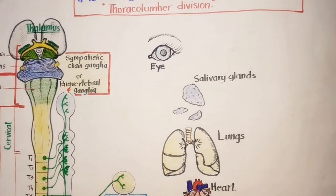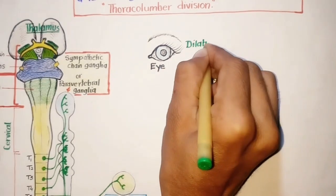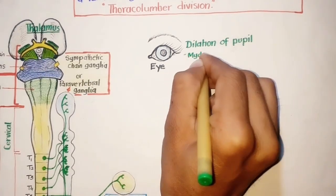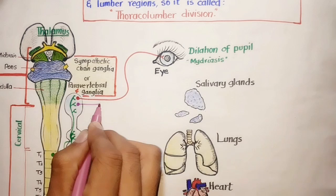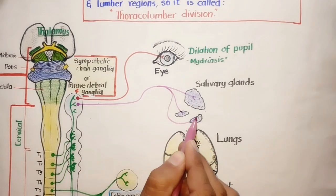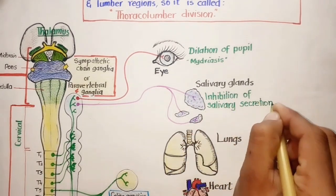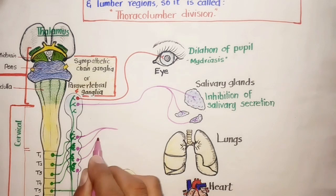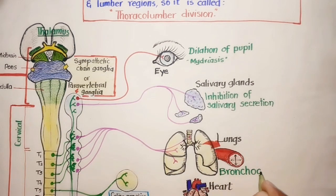Discussing briefly how these organs respond when they receive sympathetic impulses from the central nervous system: the effects include dilation of the eye pupil upon stimulation by postganglionic neurons from the sympathetic chain ganglia. The salivary glands, in response to innervation by postganglionic nerves from the sympathetic chain ganglia, result in inhibition of salivary secretion. The sympathetic postganglionic nerves from the sympathetic chain ganglia targeting the lungs cause bronchodilation.